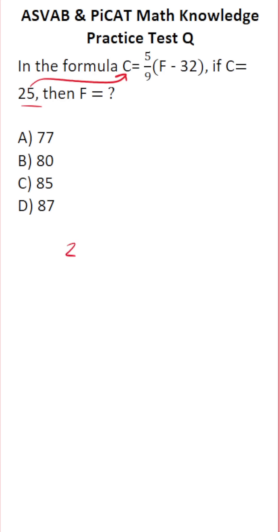So this becomes 25 equals 5/9 times F minus 32. The first thing we want to do is clear this 5/9 in front of the parentheses. And to do that, we're going to multiply both sides of this equation by the reciprocal of 5/9, notably by 9 over 5.